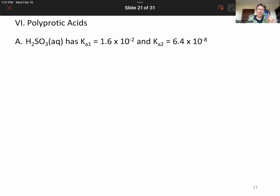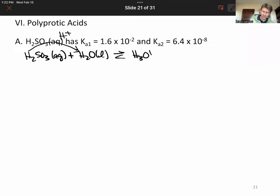The first one is always for the first proton. So that's going to be take H2SO3, put it in water. That's what we always do for Ka and KB reactions. Since it's an acid, move an H plus over. That's going to make hydronium and HSO3 minus.